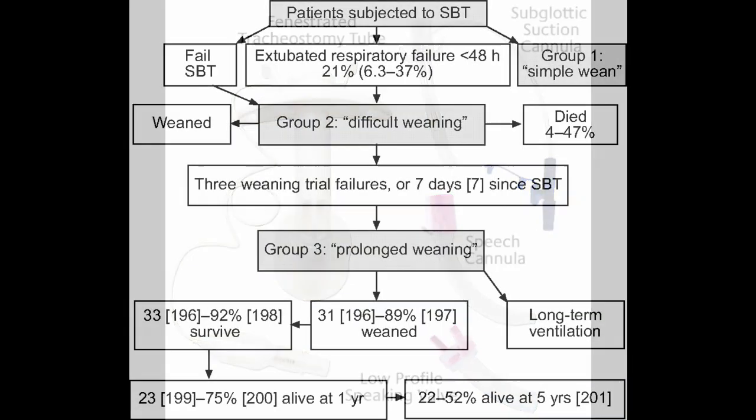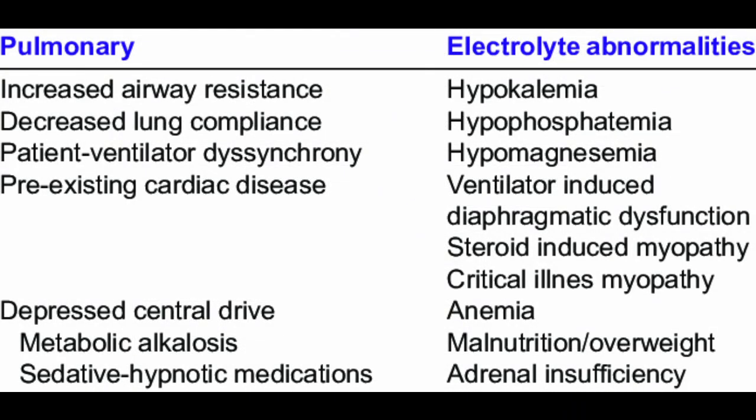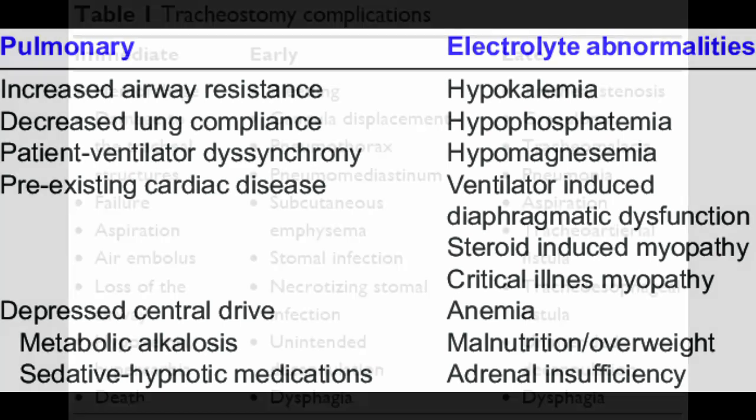Weaning isn't an exact science, and there can be lots of problems with it — for example, over-sedation, respiratory depression, and deconditioning. Just like any other muscle in the body, if you don't use the respiratory muscles for a long time, they'll start to atrophy and need to be built up. That's why the weaning approach is necessary.